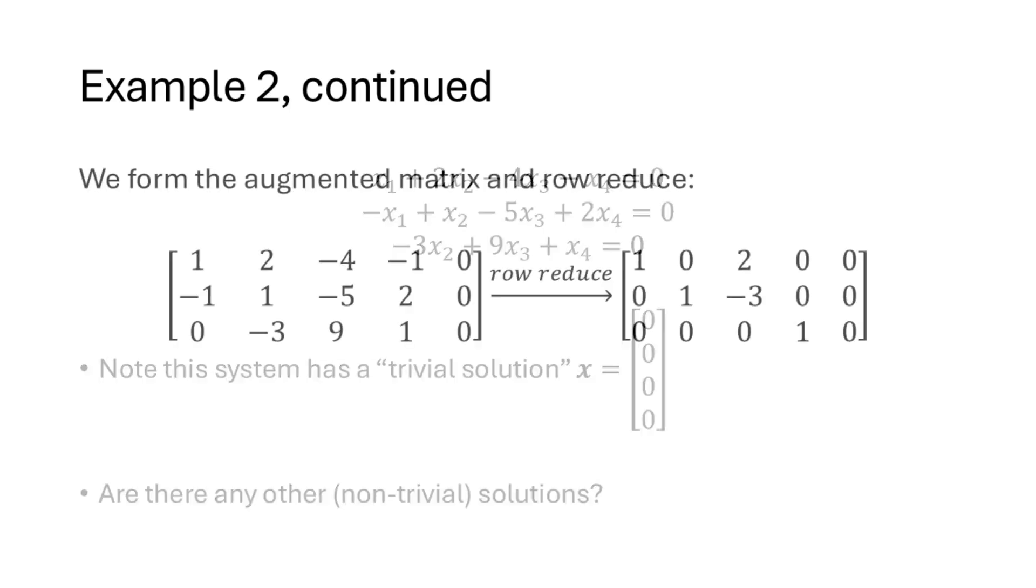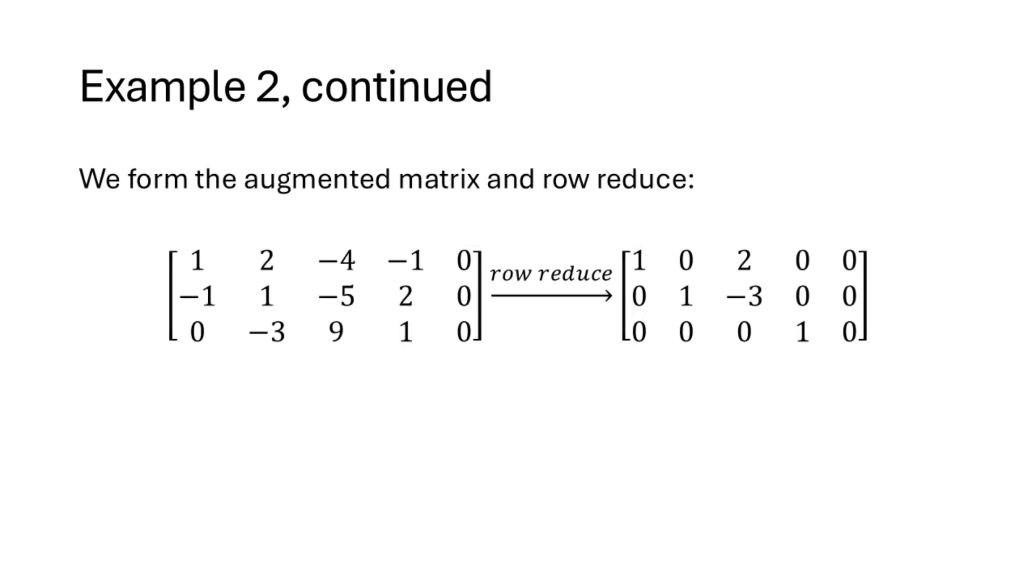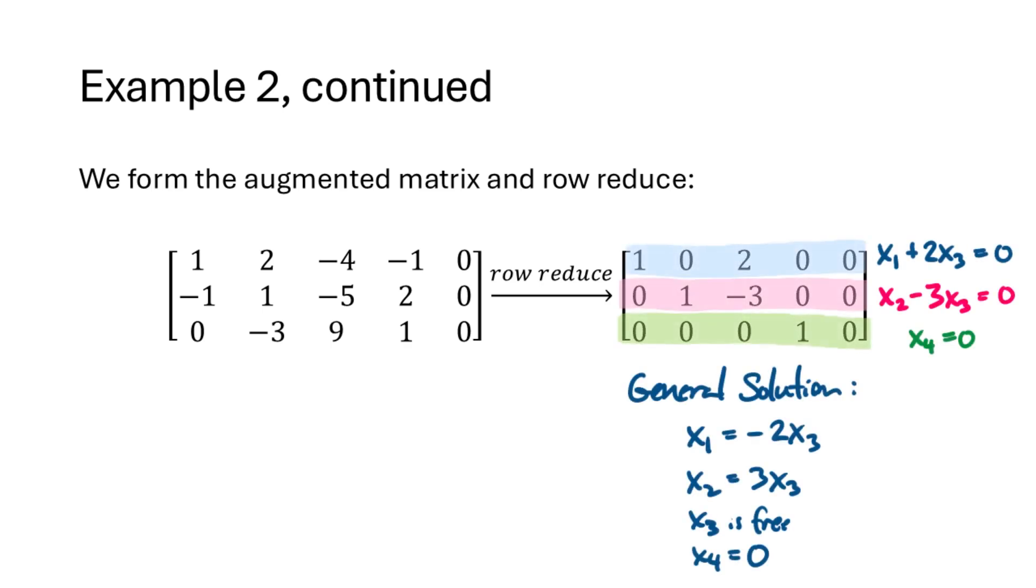How would we answer this question? Well, we follow the process that we've been doing all throughout this course so far. We set up and row reduce an augmented matrix. We look at each row of that matrix, rewrite it as an equation, and then get our general solution.